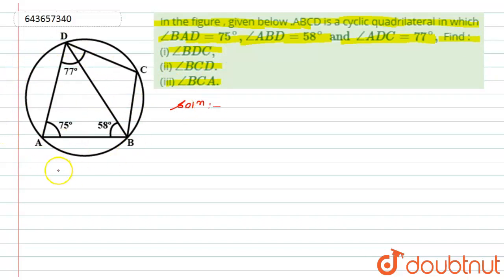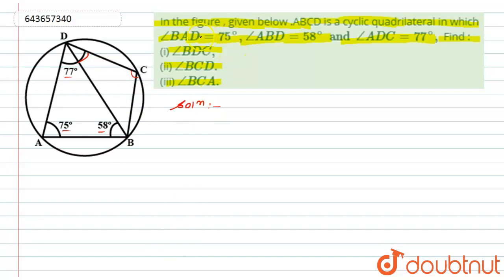In the circle, ABCD is a cyclic quadrilateral and these angles are given. We have to find angle BDC — that is this angle — then angle BCD, which means this one, and angle BCA, which is formed after drawing a line to C, forming angle BCA.